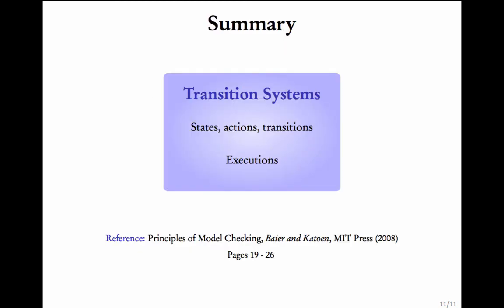So, this brings us to the end of the first module. Let me summarise what we have seen so far. We looked at a way of representing simple code using the notion of transition systems. A transition system consists of states, actions and transitions. It also consists of an initial state. We also looked at what executions of a transition system mean.